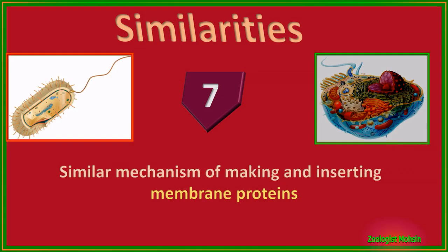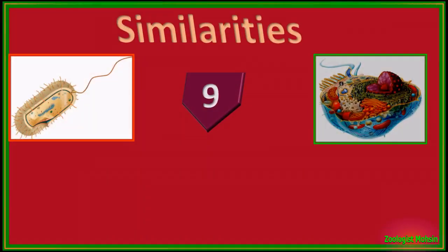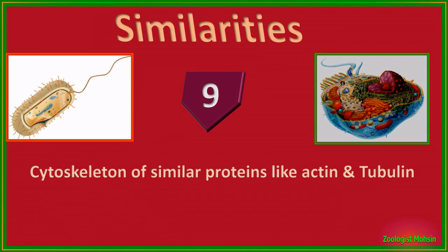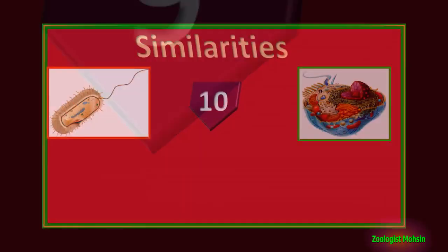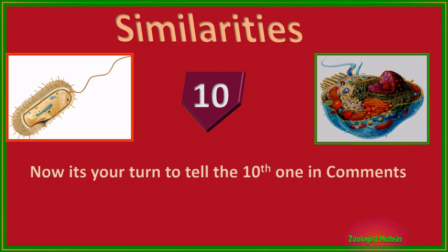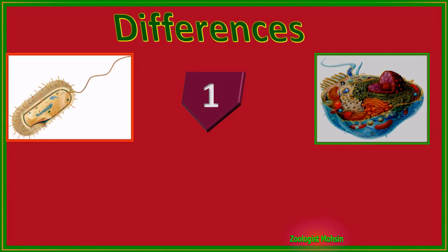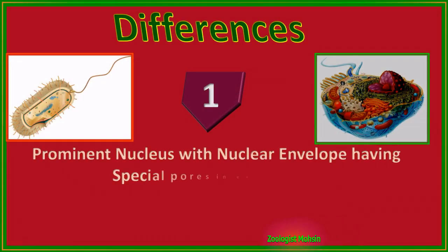Number six: both have a similar mechanism of photosynthesis, like cyanobacteria versus algae and plants. Number seven: both have a similar mechanism of making and inserting membrane proteins. Number eight: both have similar protein-digesting structures like proteasomes or protein-digesting enzymes. Number nine: both have a cytoskeleton of similar proteins like actin and tubulins.